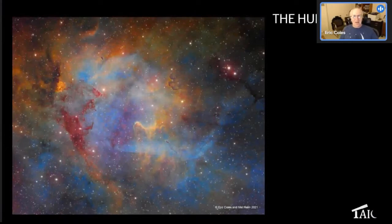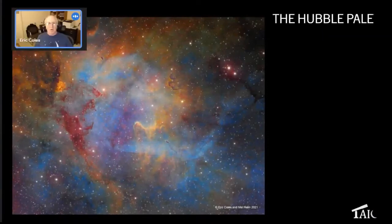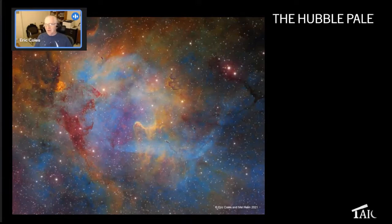Tonight I'm going to be talking about a portion of construction of a Hubble palette image, and that is tone mapping. This is the image that we're going to be talking about, and a little bit later in the presentation I'll put up a link to the actual image on AstroBin, which is what you see.